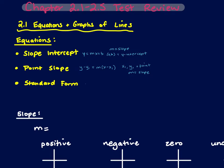Standard form is something that it can ask you to get the equation into at the end. That is ax plus by equals c, where they are all whole numbers — so no fractions or decimals. The x and y are on the same side and the x has to be positive. So if I had something in slope-intercept form, I would get rid of any fractions or decimals and then rearrange it so that x is positive and x and y are on the same side.